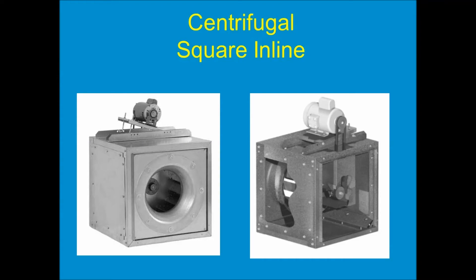We'll take that same centrifugal wheel and mount it in a square housing and it becomes a square centrifugal inline fan. The air is drawn into the center of the wheel — you can see that on the left-hand image — and the right-hand image shows the back of the fan. The air comes off the blades at 90 degrees, pressurizes that square plenum box, and then leaves via the path of least resistance out the back. We use this type of fan quite often in inline applications ducted on both sides — it's a very efficient, very reliable way to move air.